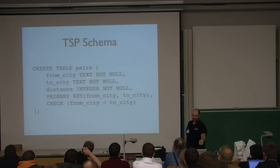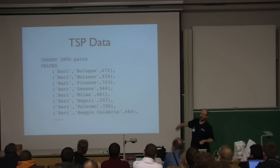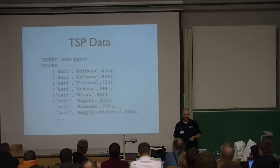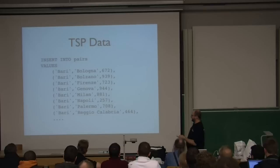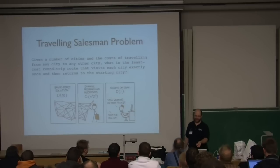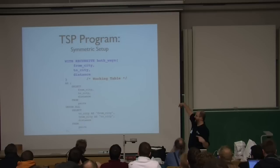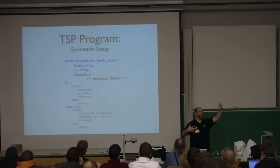We insert some data — a bunch of Italian cities and distances. Then the computation we're doing is a cheating version of brute force — I cheated to make sure the program terminates in a reasonable time. Having stored paths in only one direction, we now proceed to double the size of the table to get all paths in all directions. We say WITH RECURSIVE and use a UNION ALL — though it's not actually a recursion, WITH RECURSIVE just means recursion is allowed somewhere in the common table expressions.